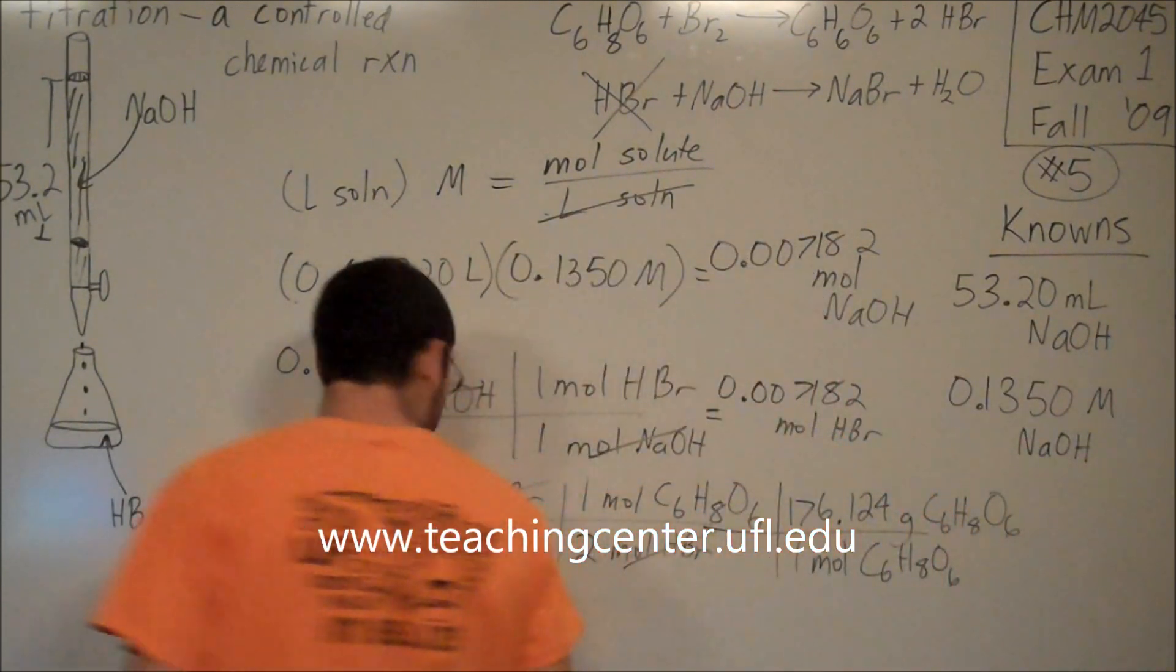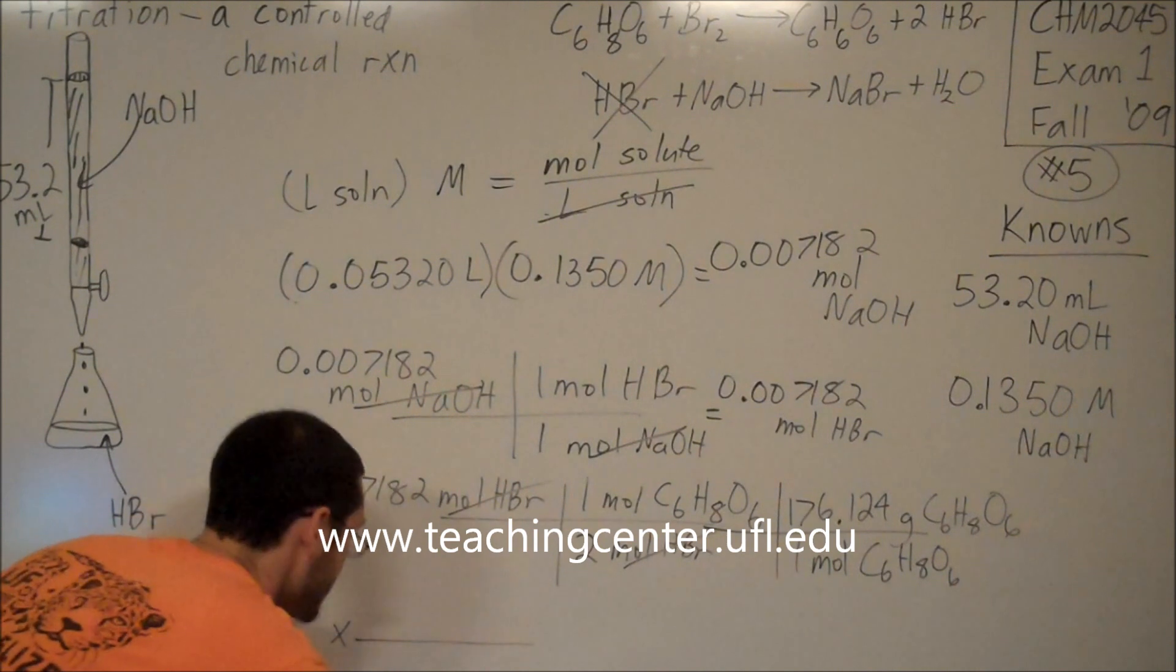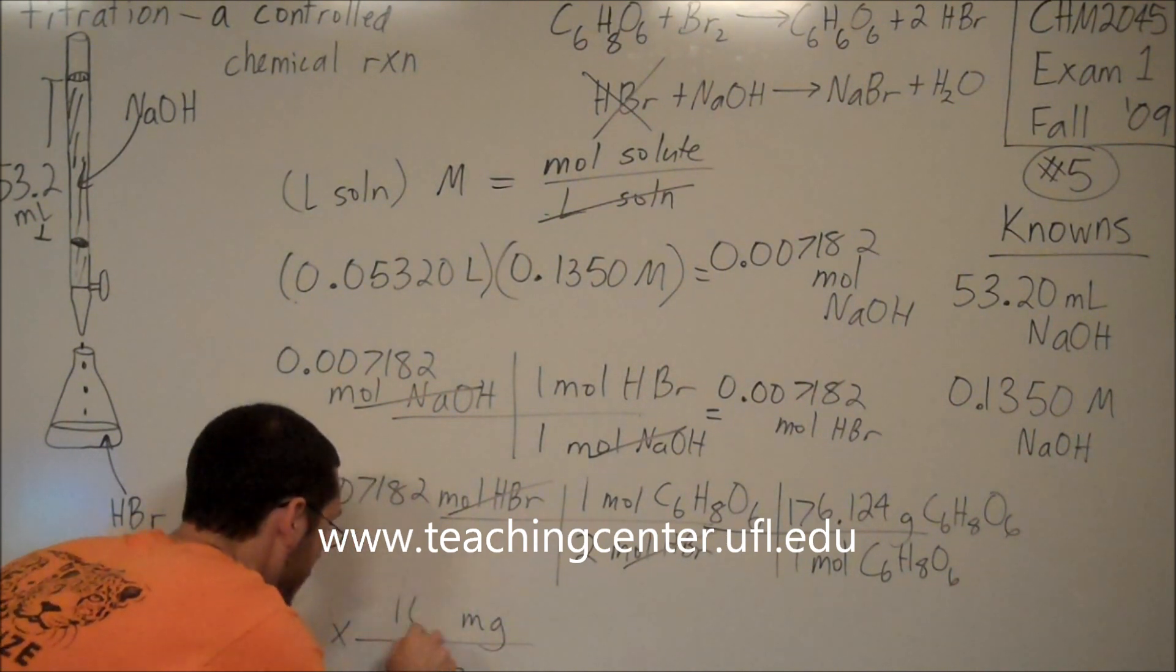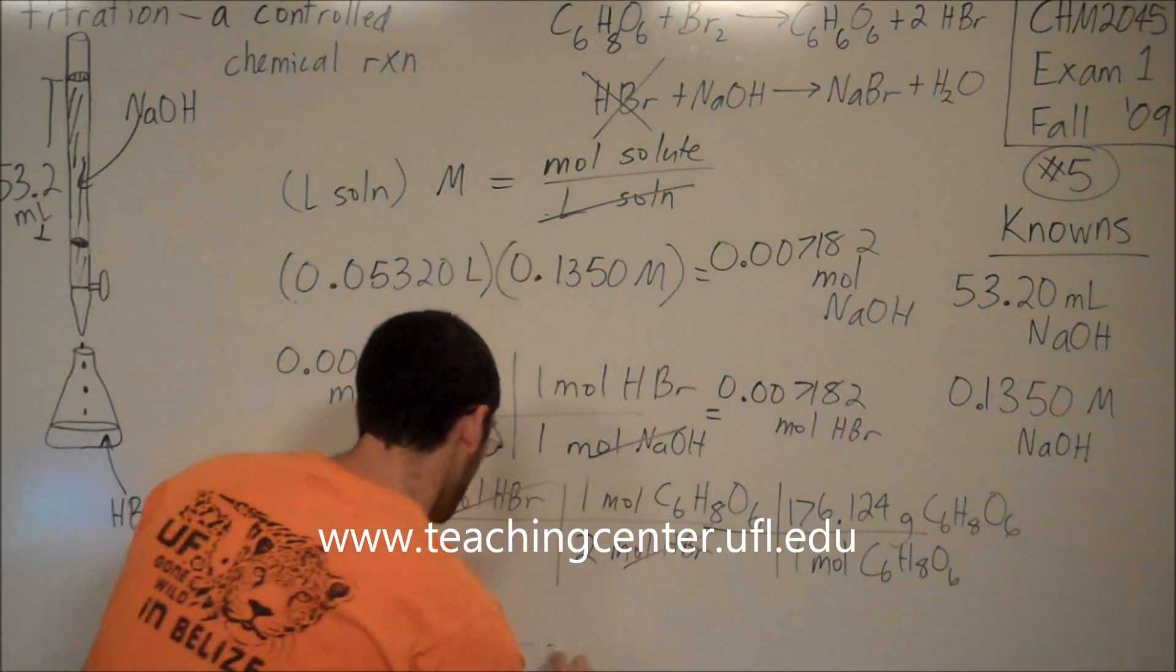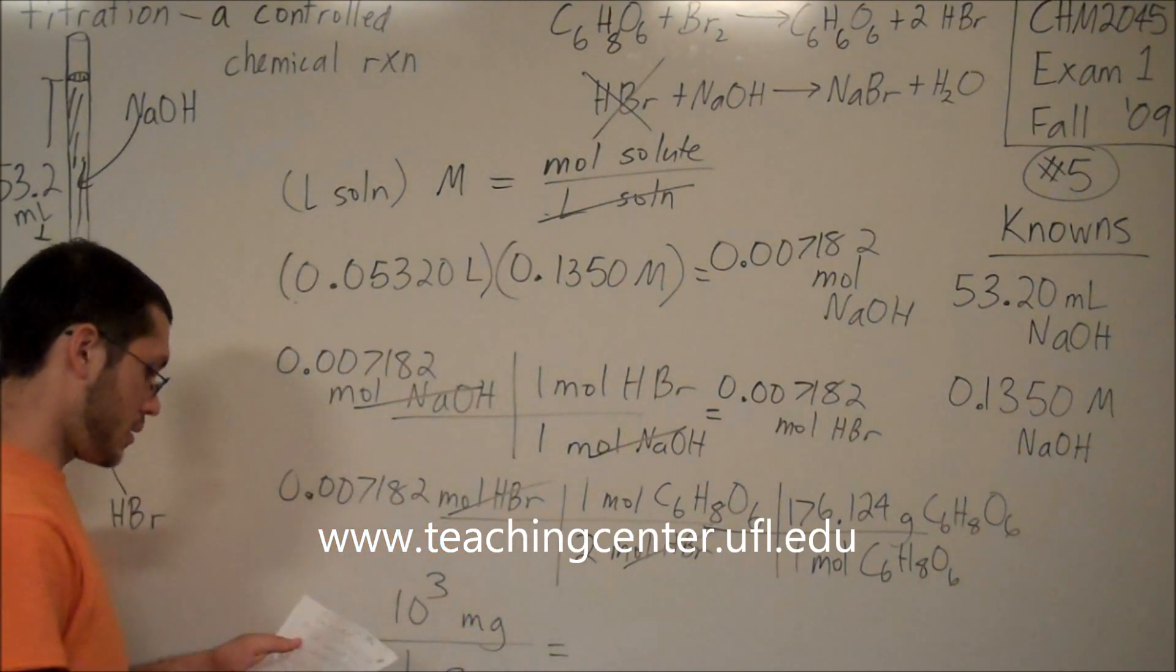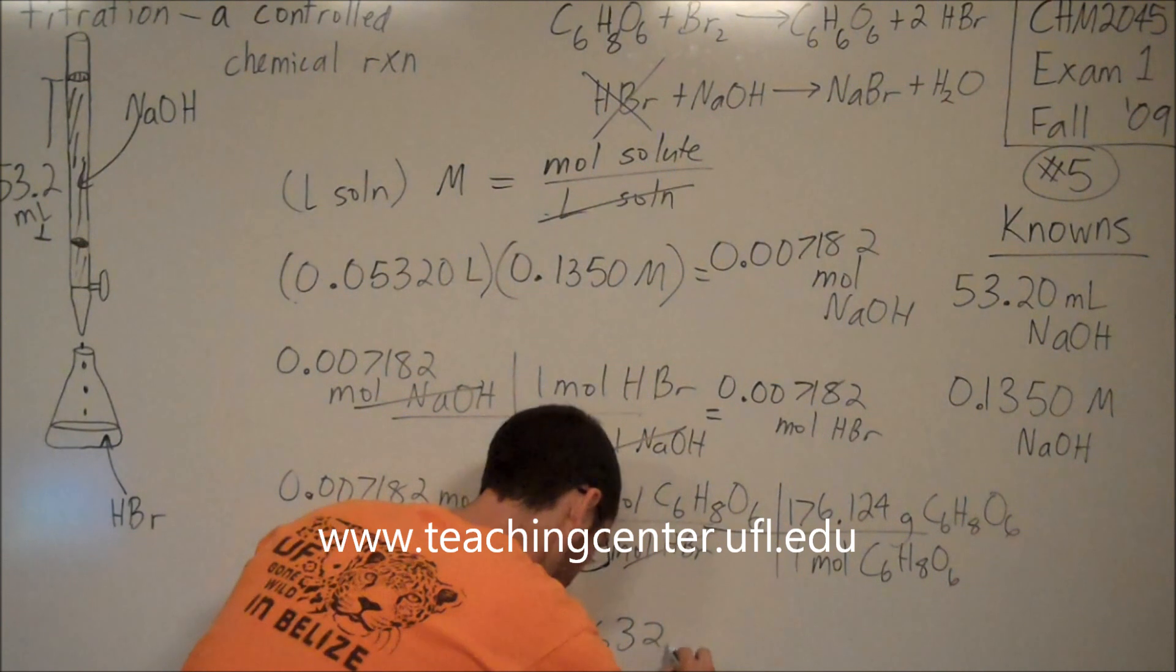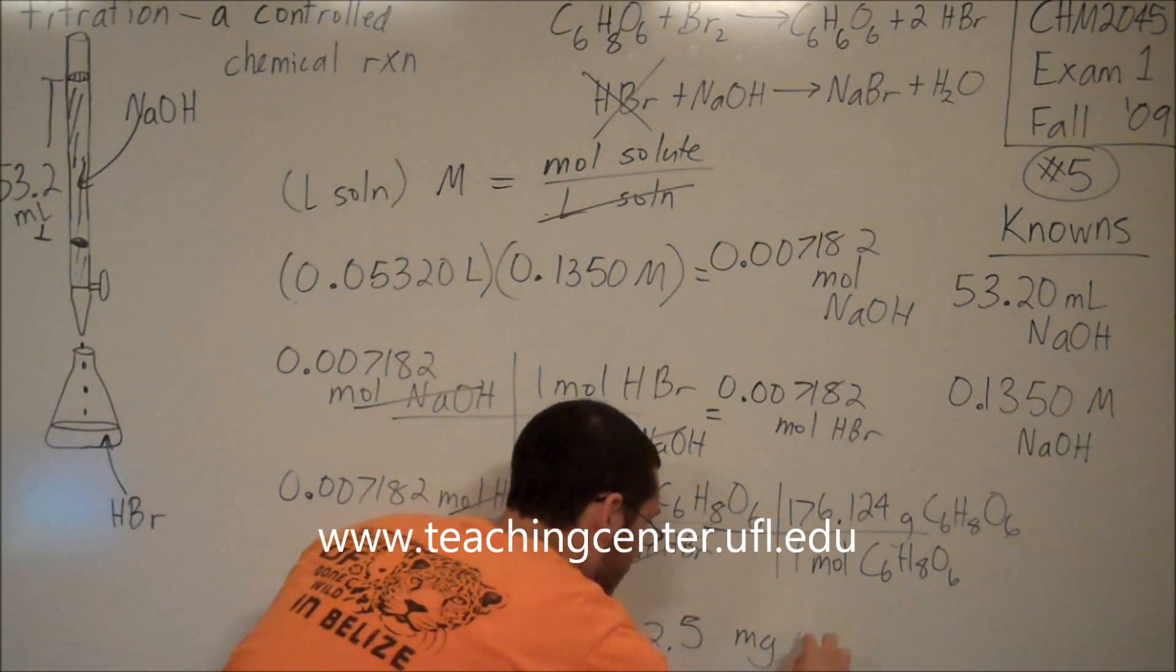And then I'm just going to convert to milligrams. I need grams on the bottom and milligrams on the top. So there are 1,000 milligrams in a gram. And finally, I get my answer: 632.5 milligrams of vitamin C.